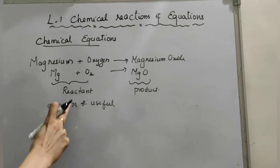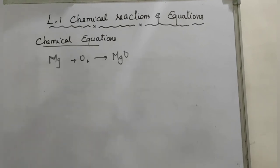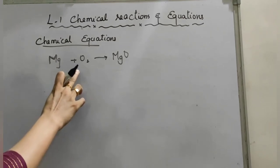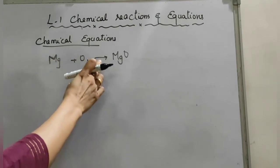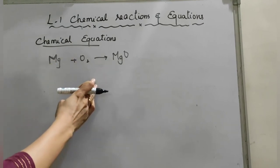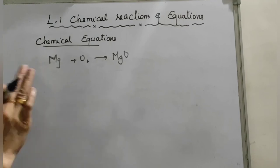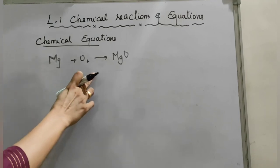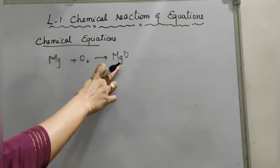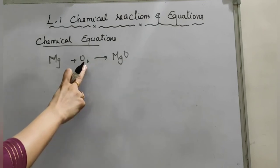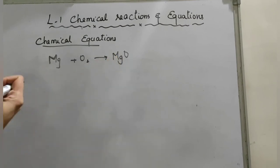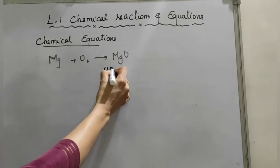Let's recall the formula of magnesium, oxygen, and magnesium oxide. Count and compare the number of atoms of each element on the LHS and RHS. In magnesium: one on each side — that's fine. For oxygen: O₂ means two atoms on the LHS but only one atom (in MgO) on the RHS — so this equation is unbalanced.